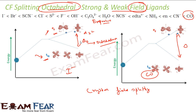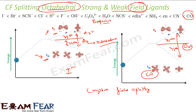The energy of eg is increased by 3/5 Δo, and the t2g energy is decreased by 2/5 Δo. This 3/5 and 2/5 ratio is maintained for octahedral splitting. The value of Δo depends on the ligands — specifically on the field produced by the ligands — and also on the charge on the metal ions, though it is mostly dependent on the ligands.